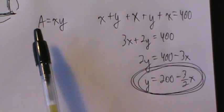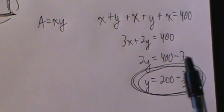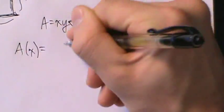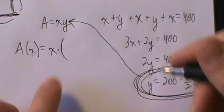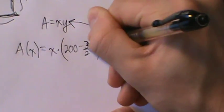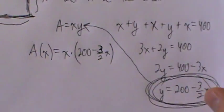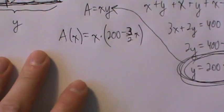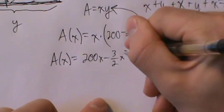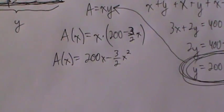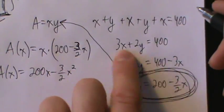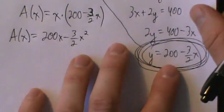x and y are the independent variables, and A is the dependent variable because it depends on x and y. Now we take our expression for y and substitute it into the area equation. So A(x) = x times (200 − (3/2)x). Simplifying, A(x) = 200x − (3/2)x². That's it for step three: reduce the equation to one with a single independent variable using the secondary equation.